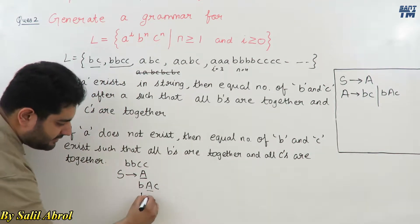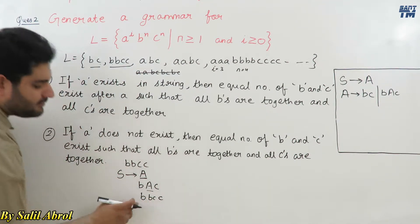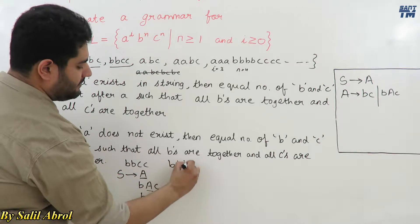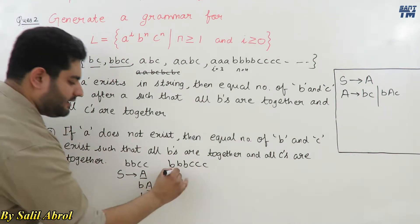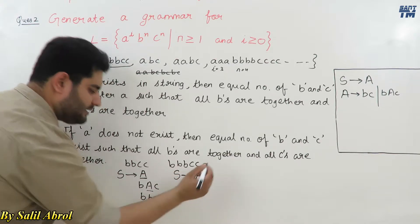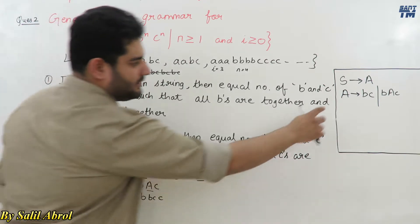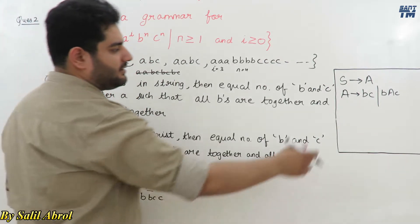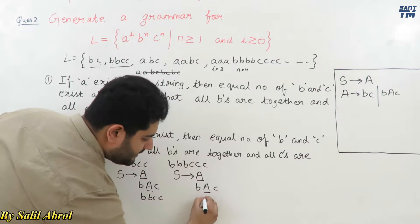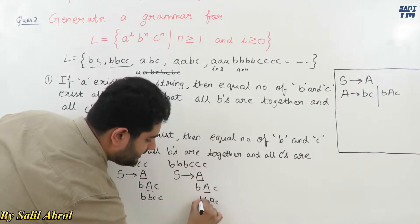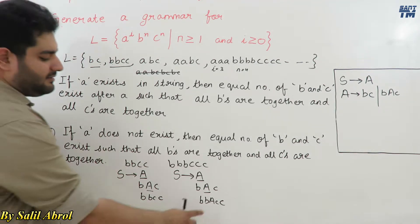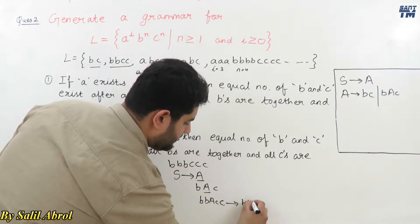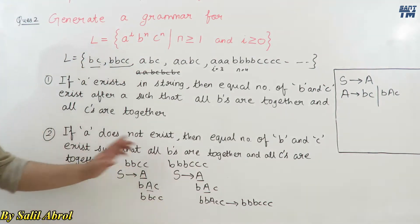Continuing the derivation: A → bAc gives bAc, then A → bc gives bbcc. For bbbccc, we apply A → bAc twice: A → bAc → bbAcc → bbbccc. The production A → bAc inserts one b on the left and one c on the right each time, and A → bc terminates the recursion.